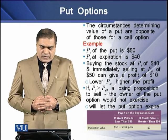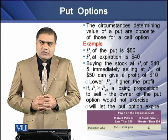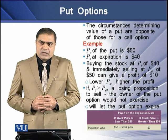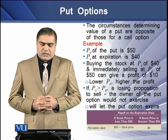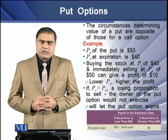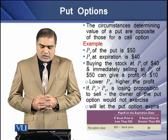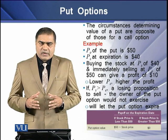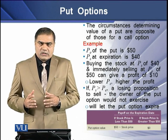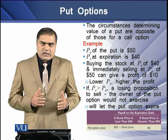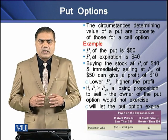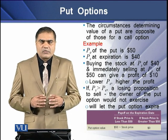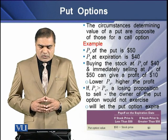Now let's say we have an exercise price of a put at $50 per share and a stock price at the expiration date is estimated at $40 each. Buying the stock at the market price of $40 and immediately selling it at the exercise price of $50 will yield a $10 profit for the holder of the put contract.